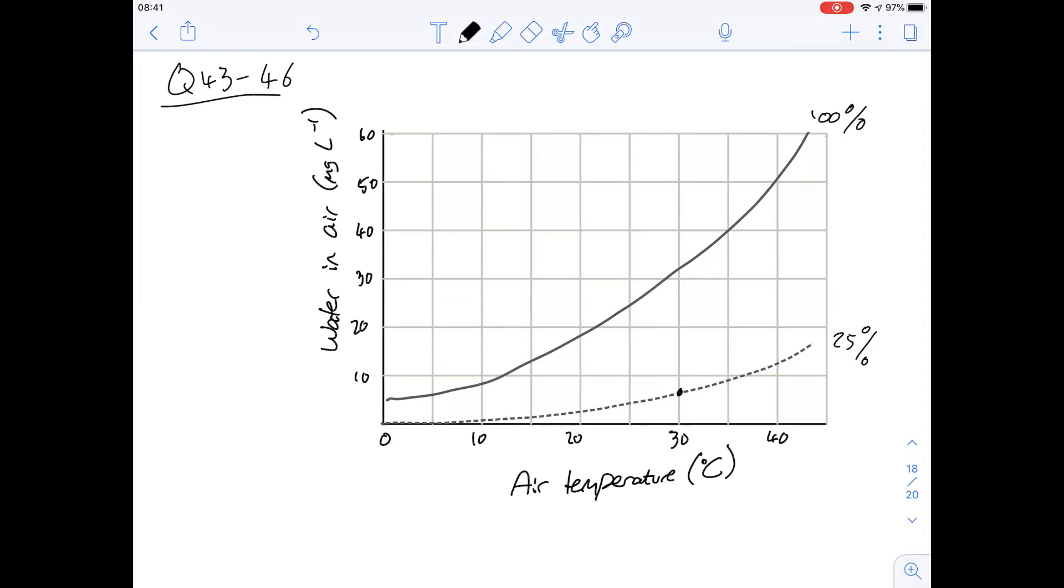Question 43 says consider a human with a body temperature of 37 inhaling air of 25 degrees C with 25% relative humidity, which of the following is closest to the mass of the water added to each liter of air as it becomes saturated and equilibrates to body temperature. We're going to be looking at this graph which I've copied out here and there's two points we need to plot.